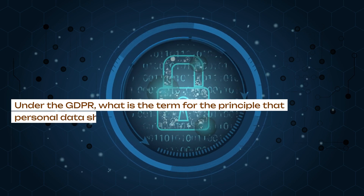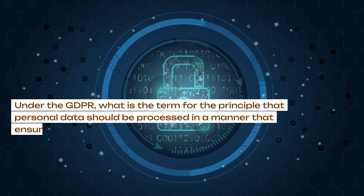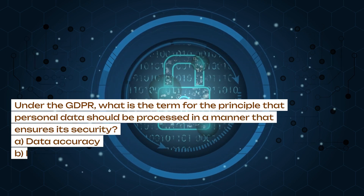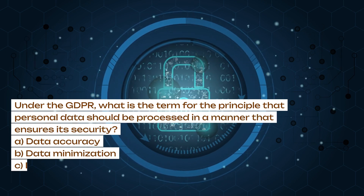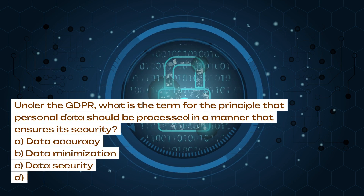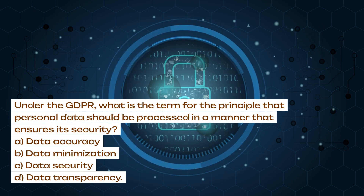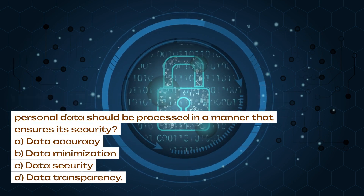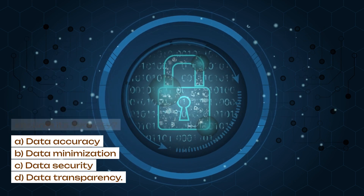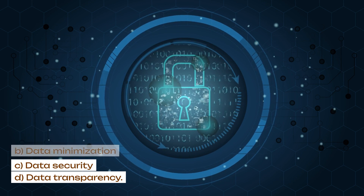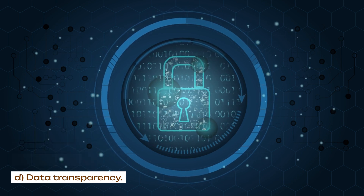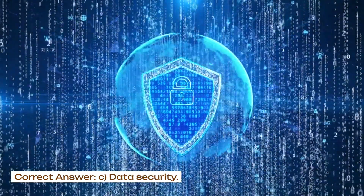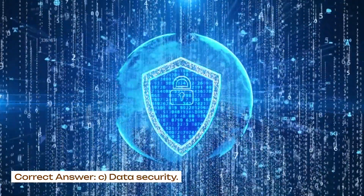Under the GDPR, what is the term for the principle that personal data should be processed in a manner that ensures its security? A. Data accuracy. B. Data minimization. C. Data security. D. Data transparency. Correct answer: C. Data security.